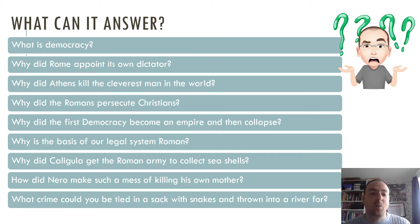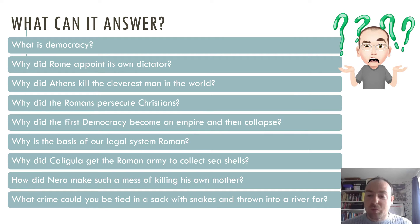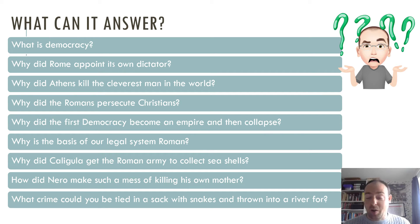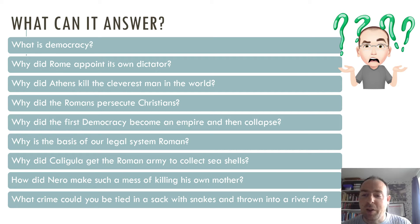We get to look at why Rome essentially elected itself a dictator, which seems like an interesting thing to do, but we get to see some of the interesting history behind it. We see why Athens decided to kill the cleverest man in the world, who was Socrates — so how could a great philosopher get to the point that he's condemned to death by a democracy? We'll look at why the Romans persecuted Christians whilst having a multitude of gods themselves. We'll look at why the first democracy, Athens, became an empire and then why that empire collapsed. We'll ask why the basis of our legal system is the Roman system and look at important legal figures such as Cicero.